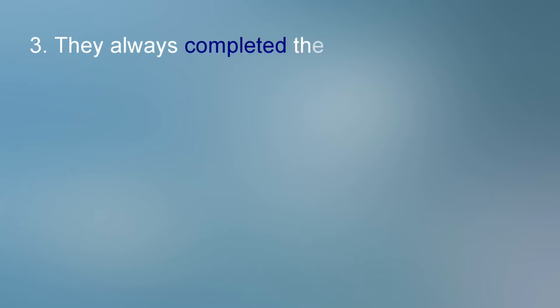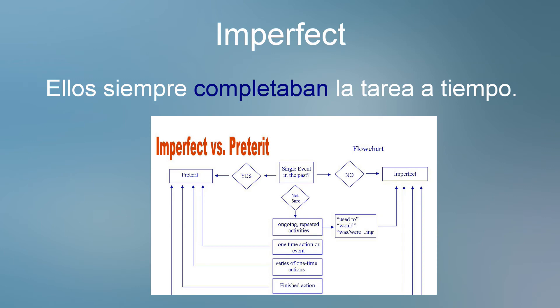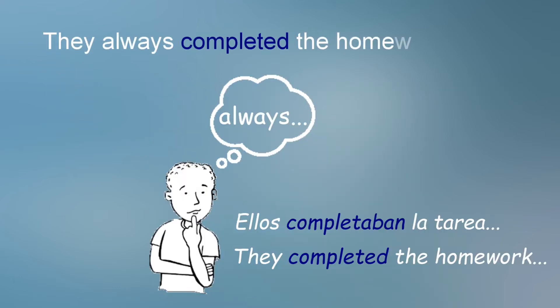They always completed the homework on time. Imperfect — because it was a repeated action. Note how the English verb 'completed' hasn't changed from the previous sentence. So in Spanish: ellos siempre completaban la tarea a tiempo. Notice how in Spanish the verb changed to reflect the thought behind it, not necessarily just the English translation.